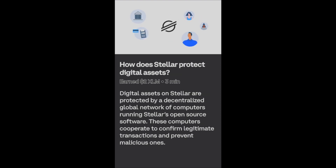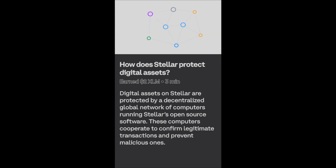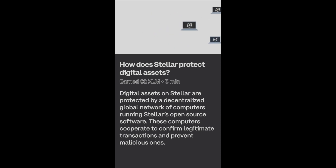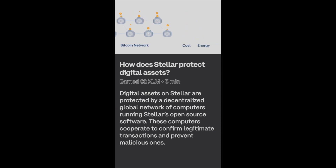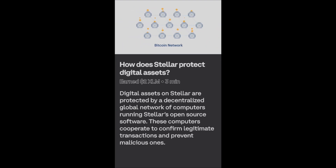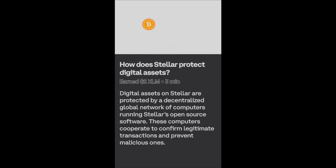Stellar is a platform that connects payment systems and people. It's a decentralized network, meaning no single company has the power to turn it off. Stellar's decentralized network is made up of all the independent computers that run Stellar software — anyone can join. Stellar's network is different from Bitcoin's in a few key ways. Computers on Bitcoin's network compete with each other to validate transactions through a process called mining, which requires expensive hardware and lots of electricity. Stellar doesn't rely on mining.